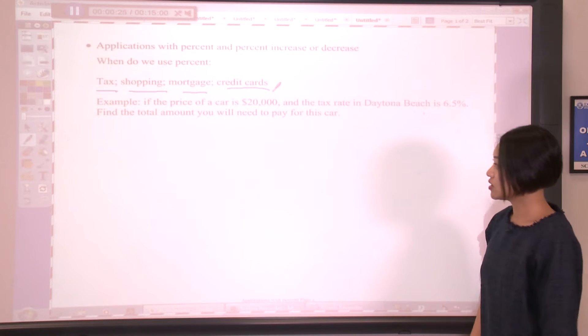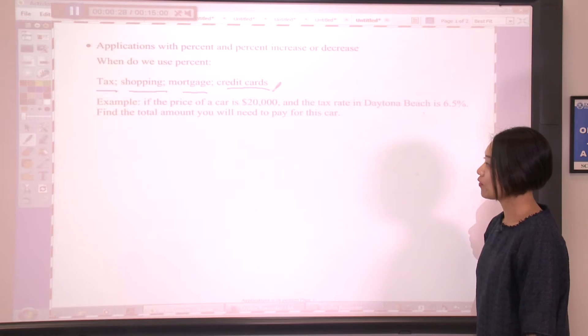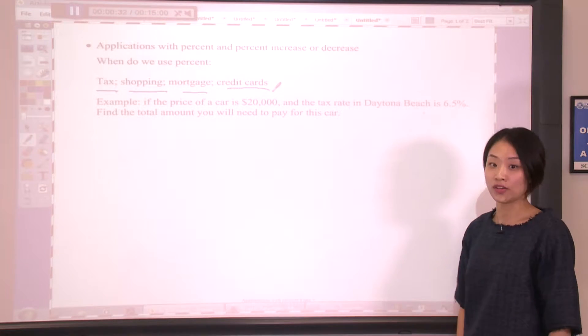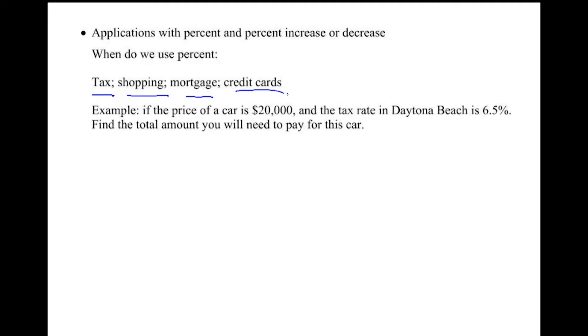Let's start from the tax rate. For example, if the price of a car is $20,000 and the tax rate in Daytona Beach is 6.5%, find the total amount you will need to pay for this car.